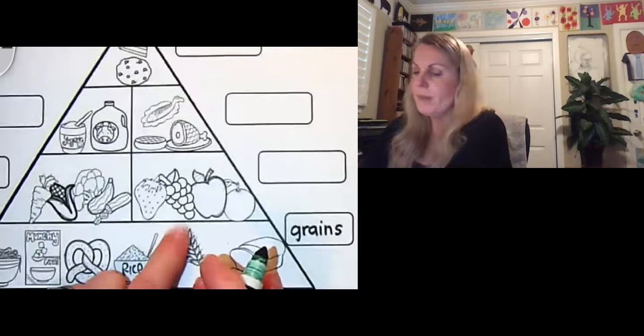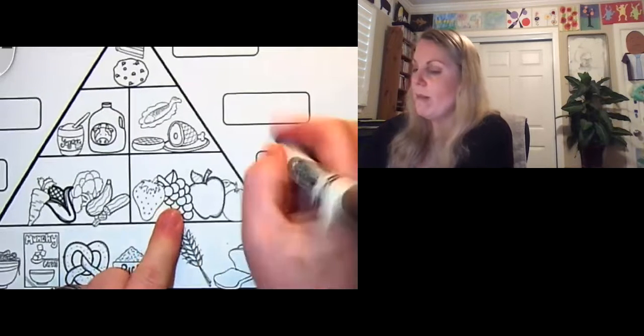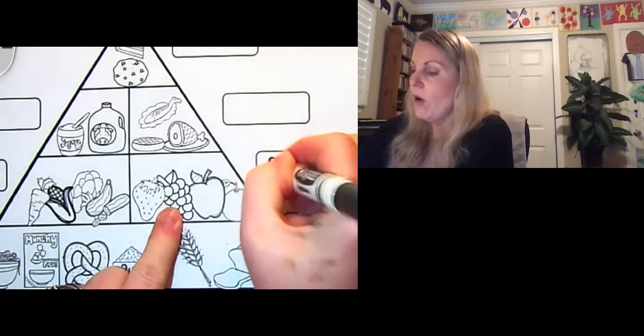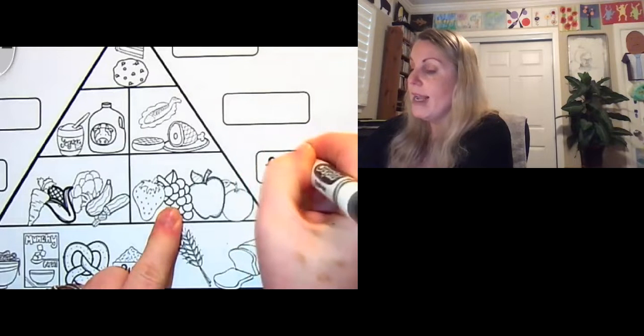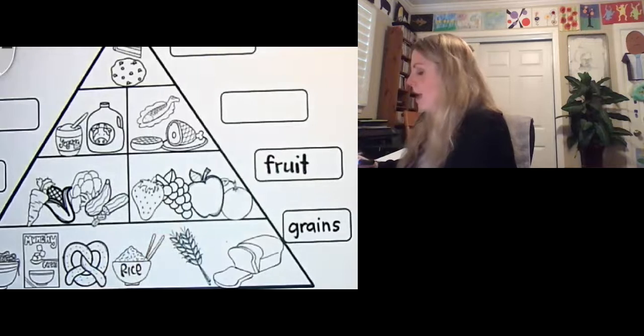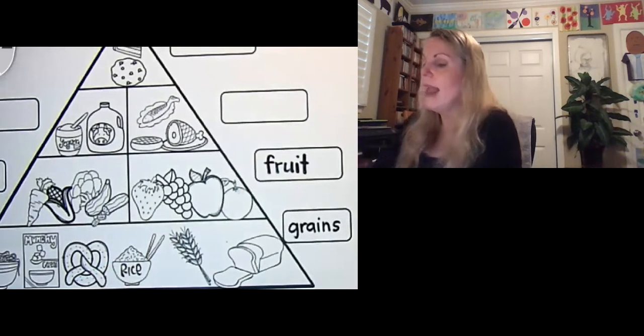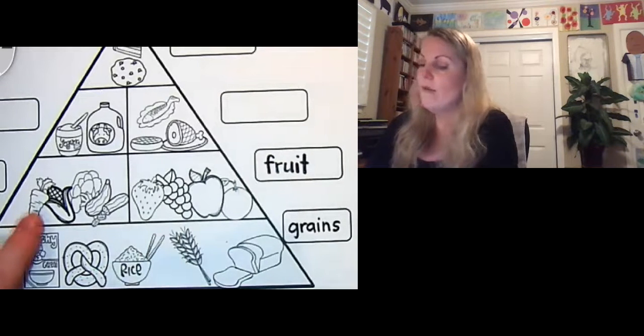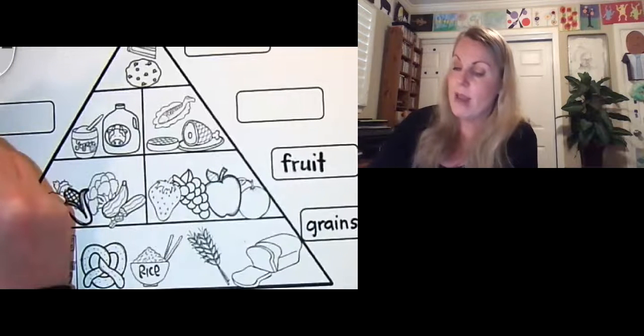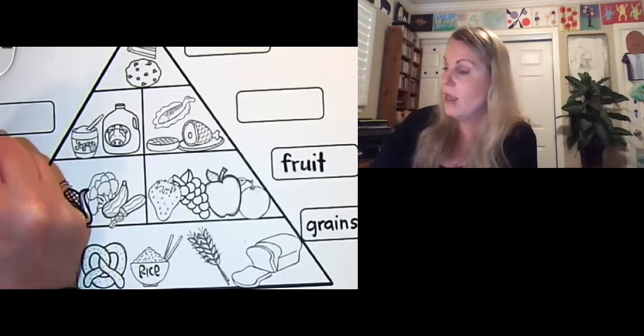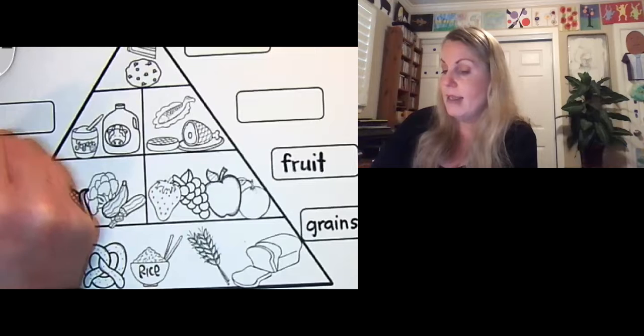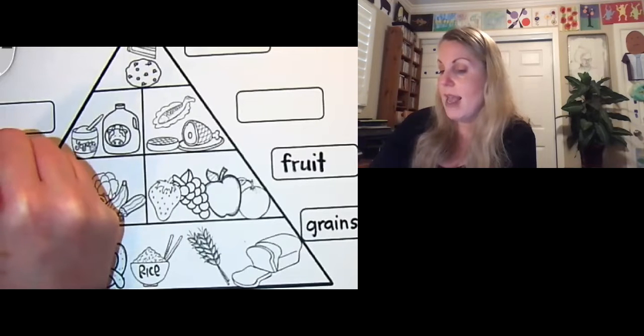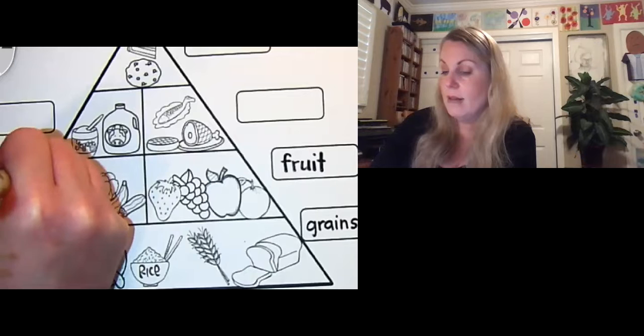Then when we look up here, what is this called? Do you remember? Fruit. F-R-U-I-T. And then we have our next one. And when we look at this, these are our vegetables. So we have V-E-G-E-T-A-B-L-E-S.